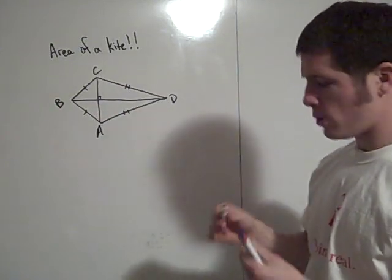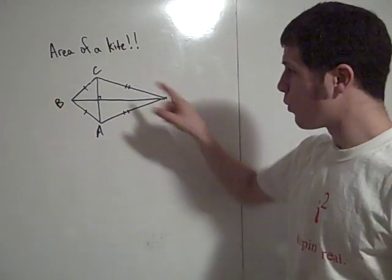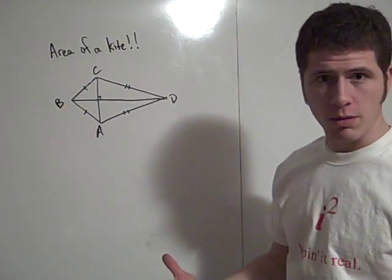So by side, side, side, these two triangles are congruent. So all you really need to do is find the area of one of these triangles and then double it.